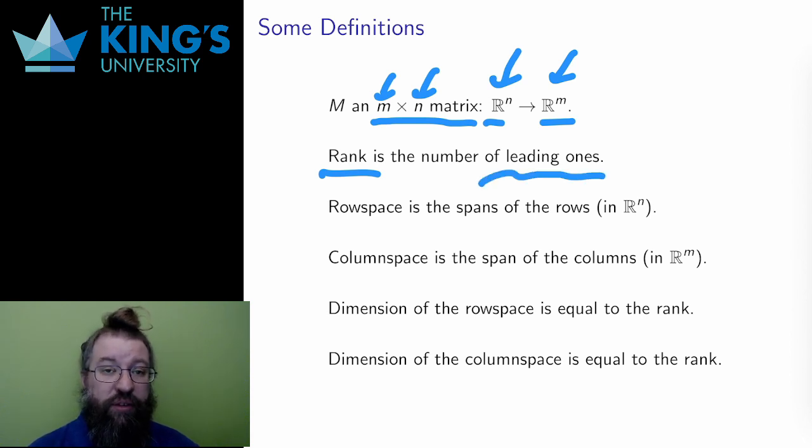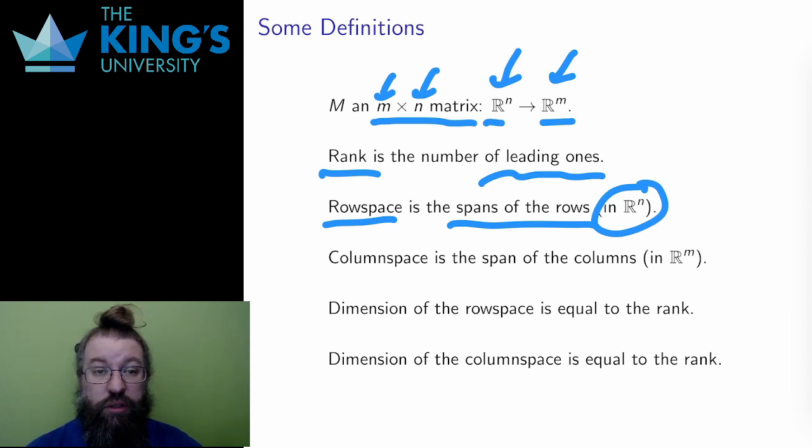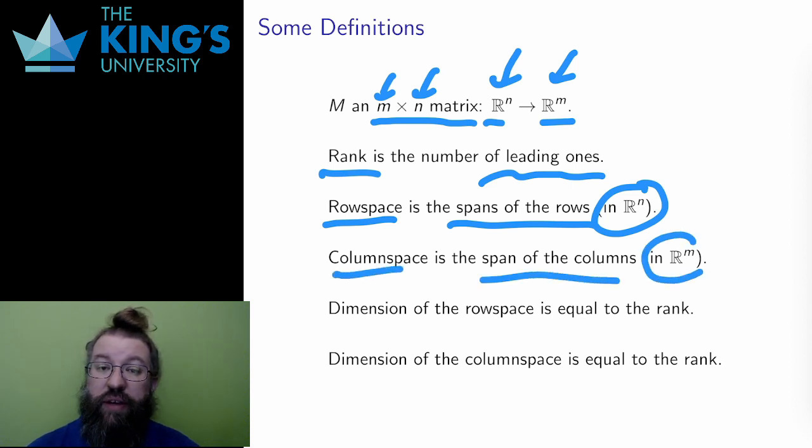The row space of a matrix is the span of the rows. Each row can be thought of as a vector in R^n. They are a set of vectors, so I can consider their span. And likewise, the column space is the span of all the columns. Each column can be considered a vector in R^m. The columns are a set of vectors, so I can consider their span.